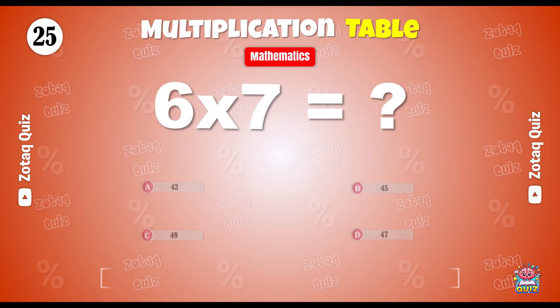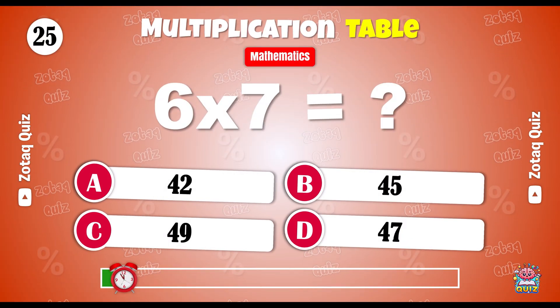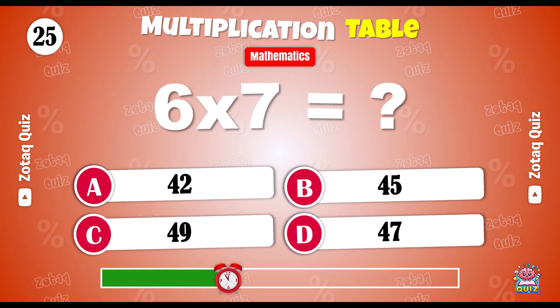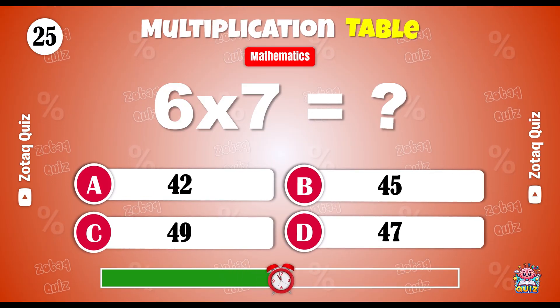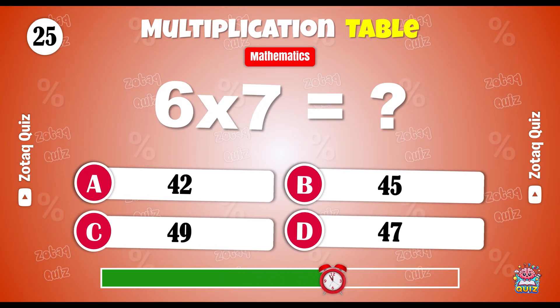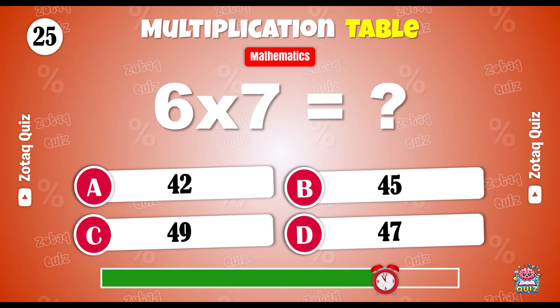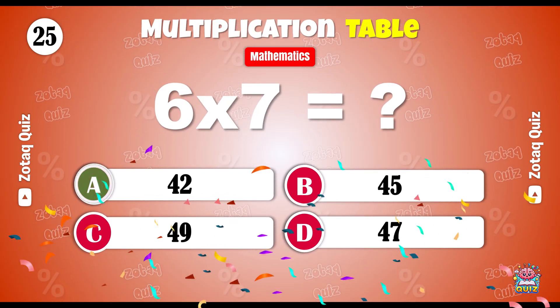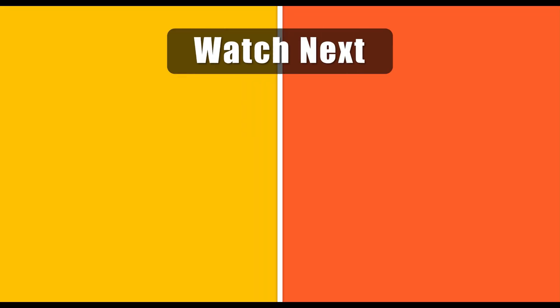Last but not least. What is 6 x 7? 42 is the right answer. Subscribe for more.